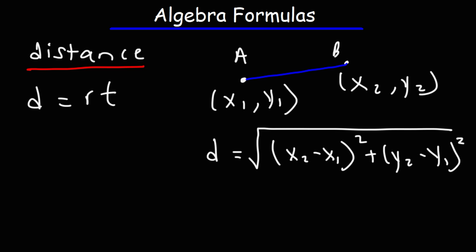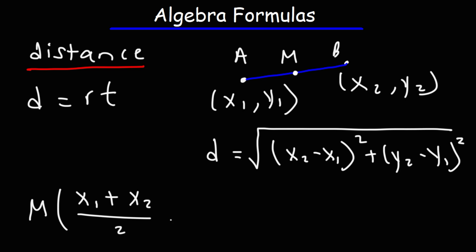Now if you want to find the midpoint between points A and B, you can use the midpoint formula. The coordinates of the midpoint are the average of the x values and the average of the y values. That's how you find the coordinates of the midpoint between points A and B.